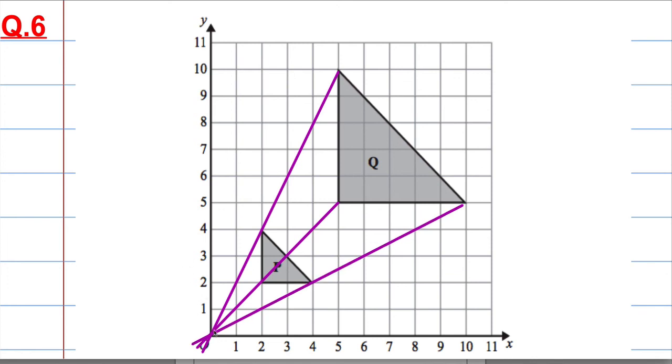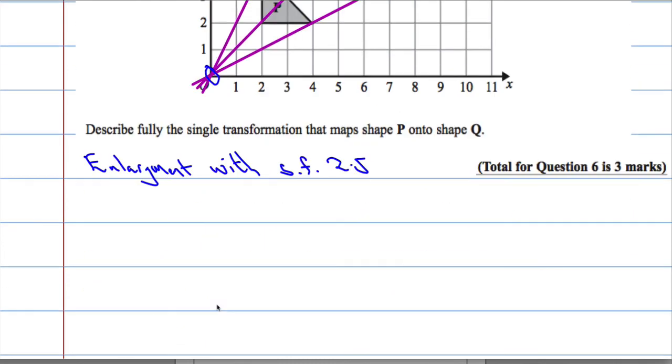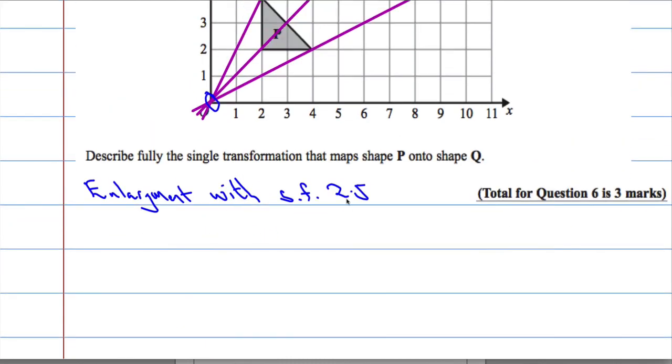And we can see that it does. So 0, 0 is the centre of the enlargement. So it's an enlargement with a scale factor of 2.5 through 0, 0. And that's your three marks.